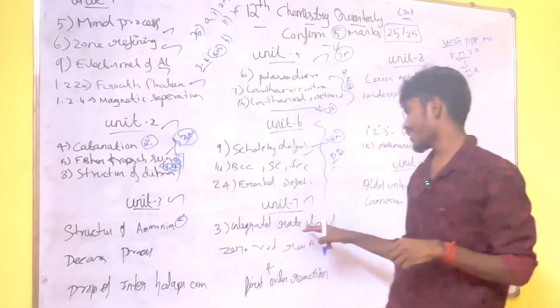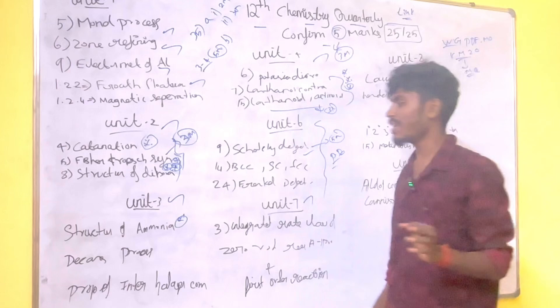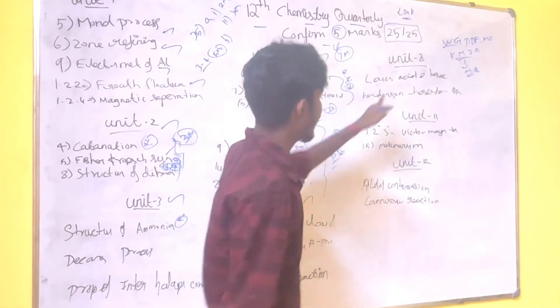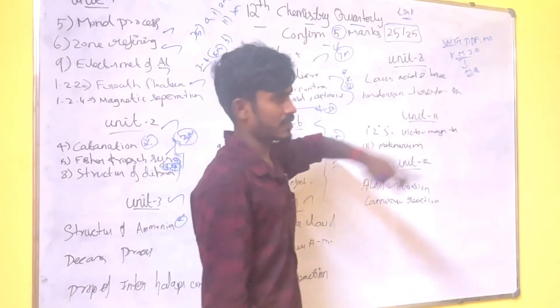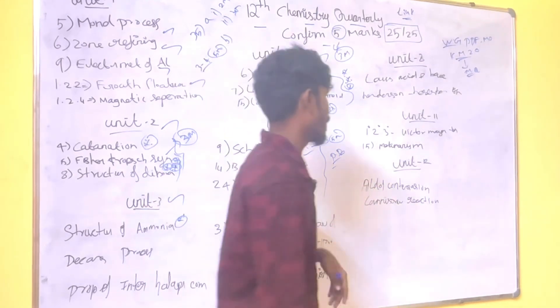Unit 7, integrated rate of zero-order reaction and integrated rate of first-order reaction. This is unit 7. Unit 8, Lewis acid and Lewis base. Henderson-Hasselbalch equation and Heisenberg uncertainty principle. Very very important.